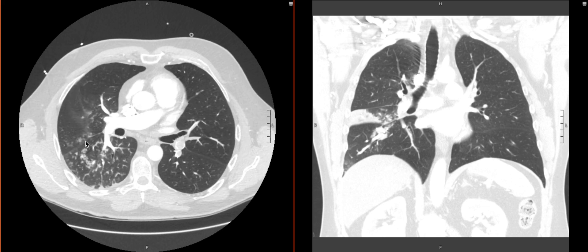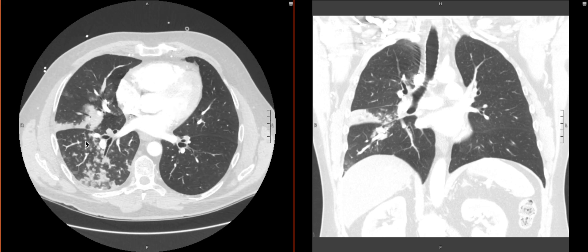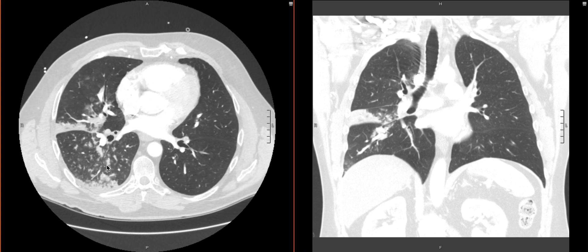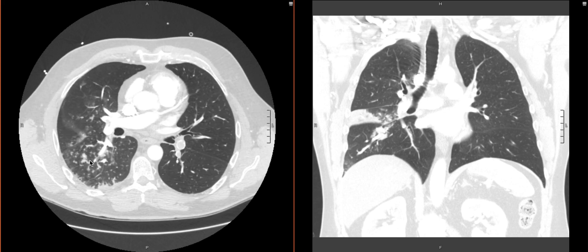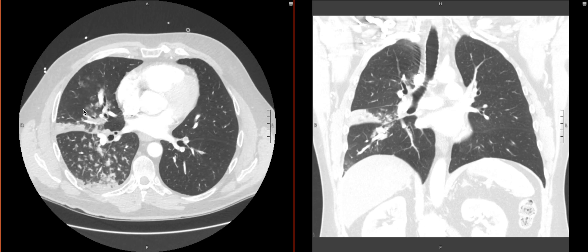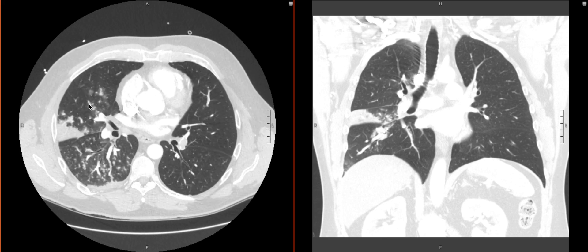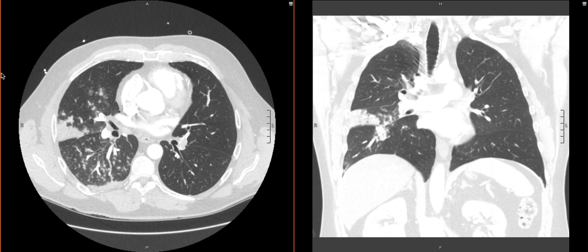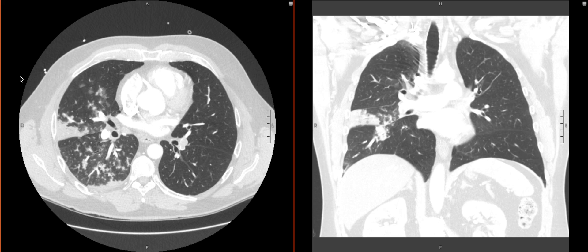This patient has multiple things going on, especially throughout the right lung. We see a lot of centrilobular, or more tree-in-bud consolidations, suggestive of infection or aspiration in the lower portion of the right lung, and there are also areas of ground glass. But what we really want to focus on is this very peripheral wedge-shaped consolidation — we can appreciate it here in the right middle lobe.